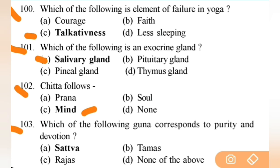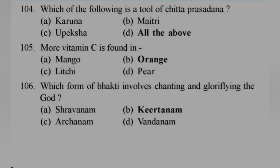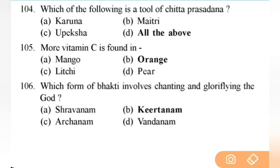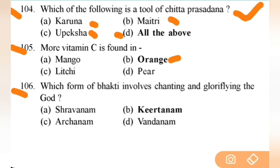Which of the following Guna corresponds to purity and devotion? Right answer is A — Sattva Guna. Next: which of the following is a tool of Chitta Prasthana? Right answer is all of the above — Karuna, Maitri, Upeksha — very important. Next: more Vitamin C is found in orange. Next: which form of Bhakti involves chanting and glorifying God? Right answer is Kirtana Bhakti.